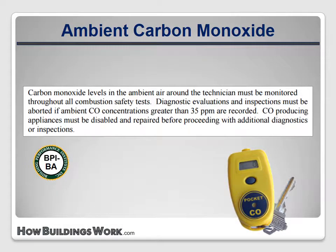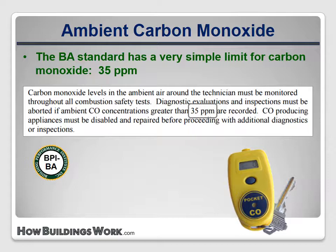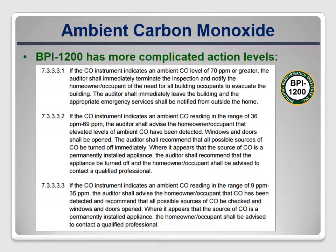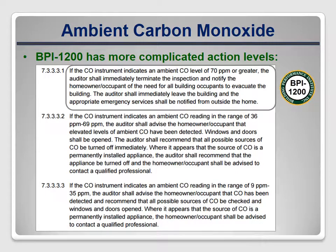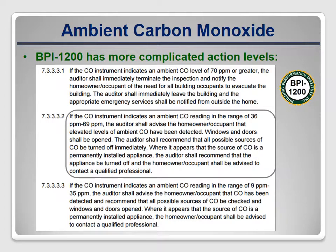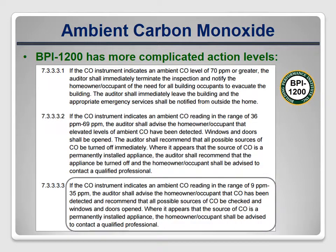The BA Standard is very clear about ambient carbon monoxide: if the level ever goes above 35 parts per million, testing must stop and the building must be evacuated. BPI 1200 has more complicated action levels. A reading of 70 parts per million or higher is an emergency requiring evacuation and notification of emergency services. Readings between 36 and 69 parts per million require advising the occupant to open doors and windows and recommending they turn off all CO sources and contact a qualified professional. Readings of 9 to 35 parts per million still require notifying the homeowner and recommending that all possible sources be checked by a qualified professional.